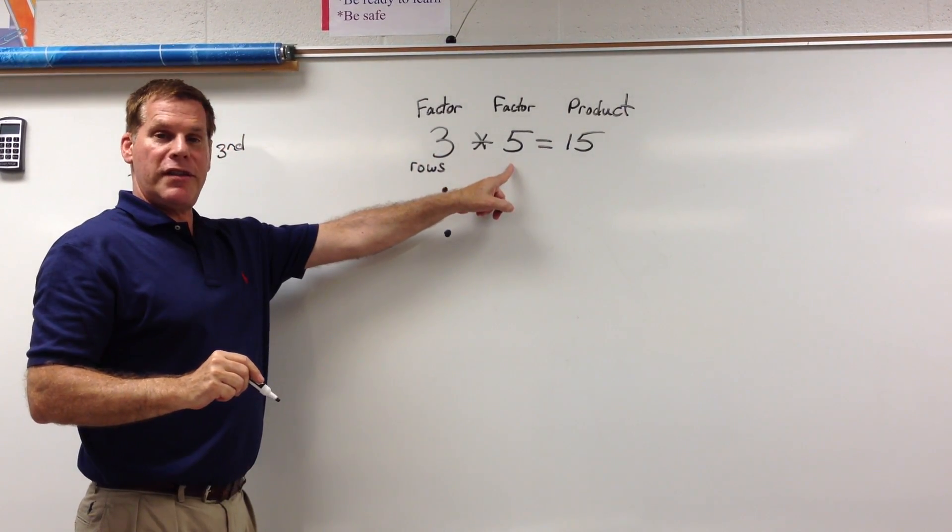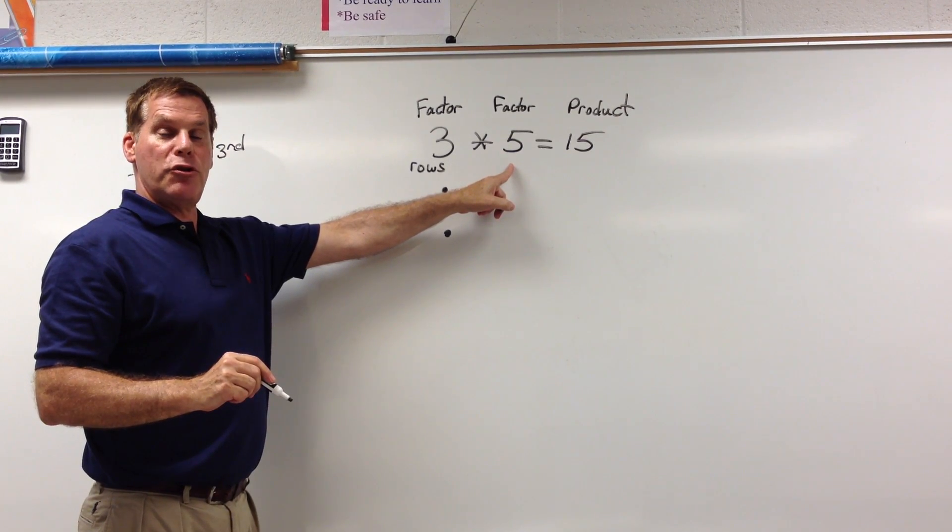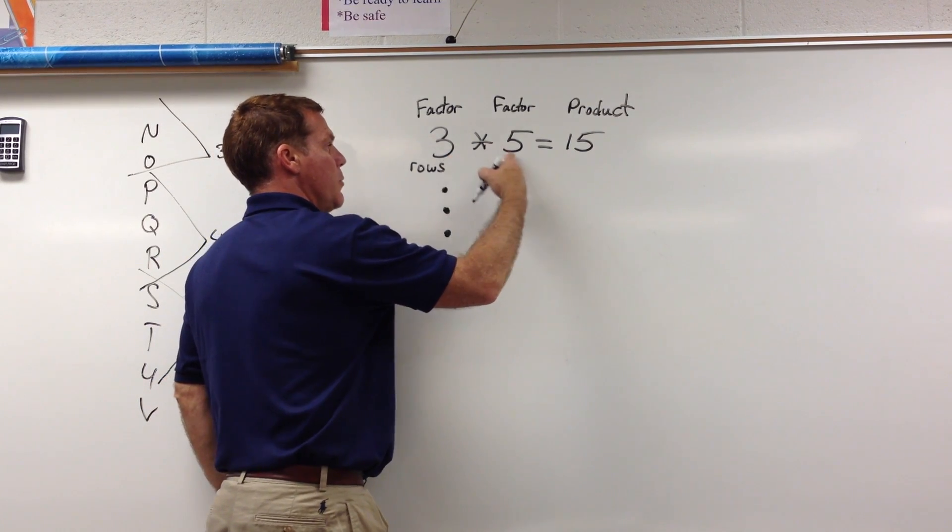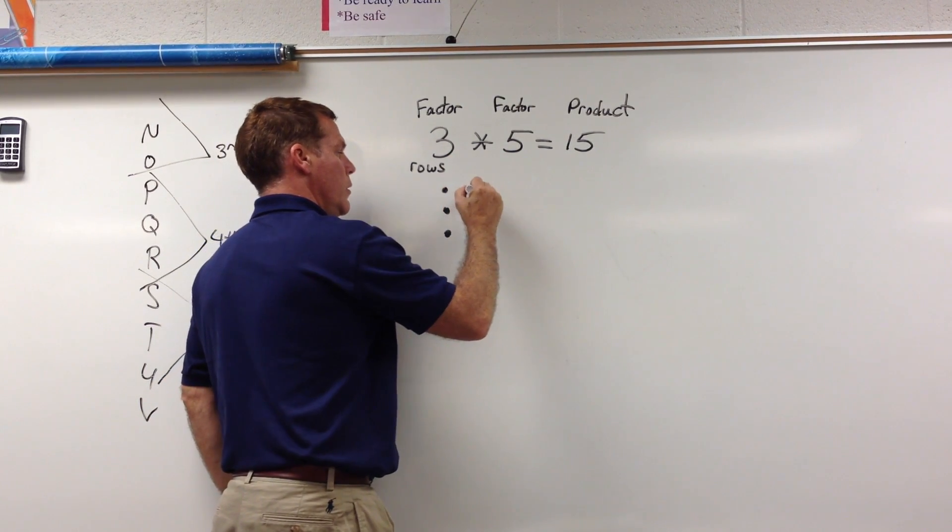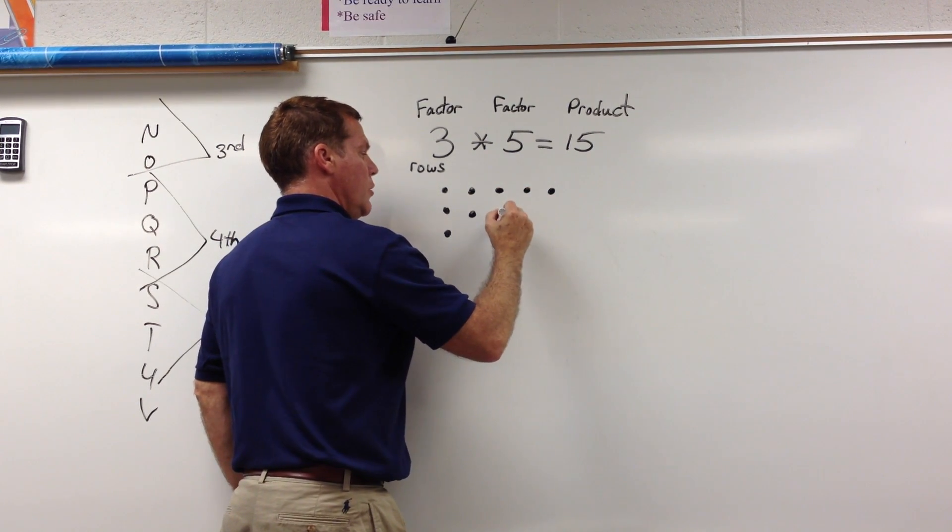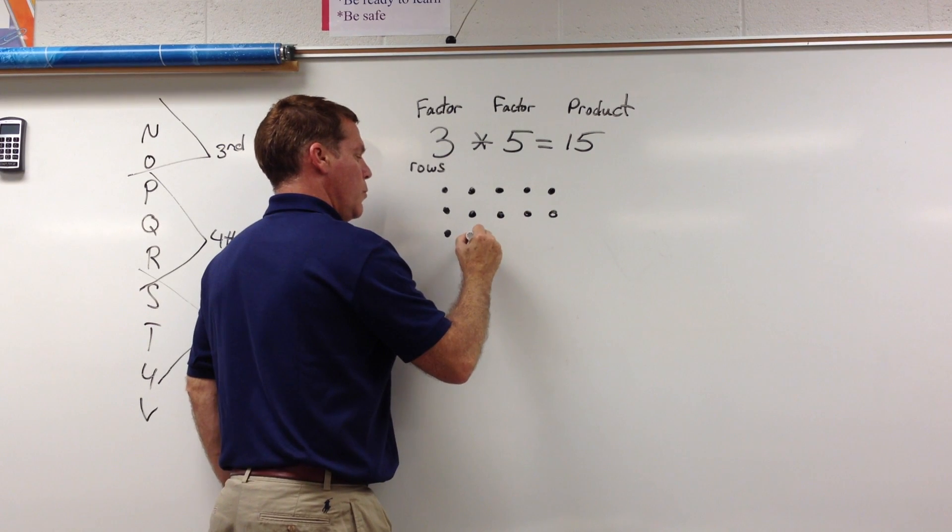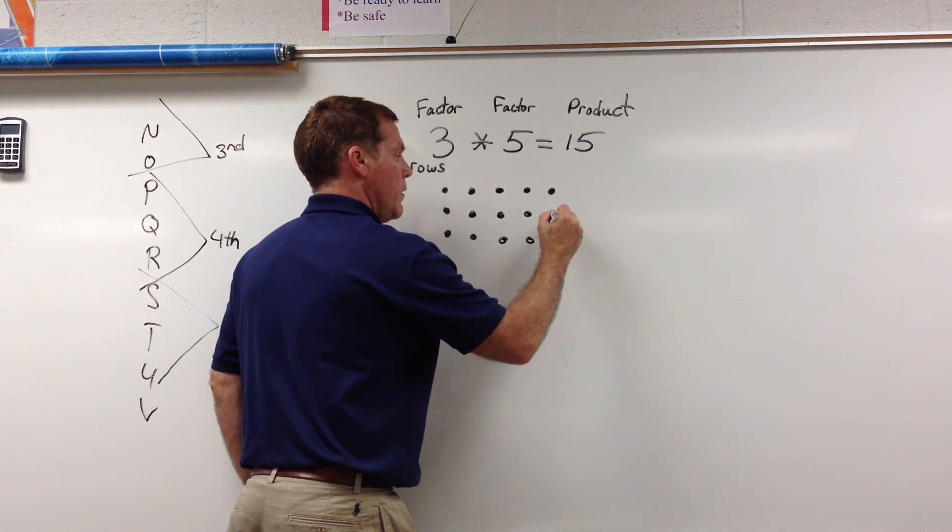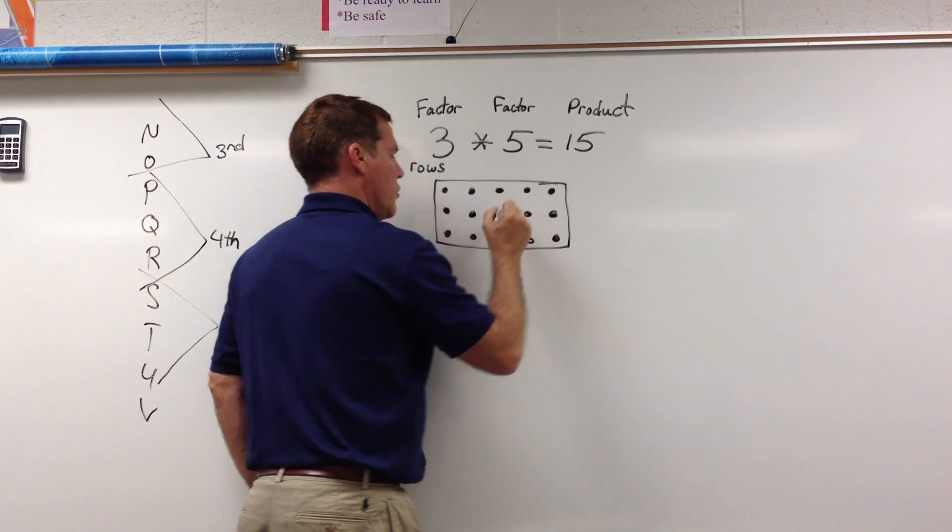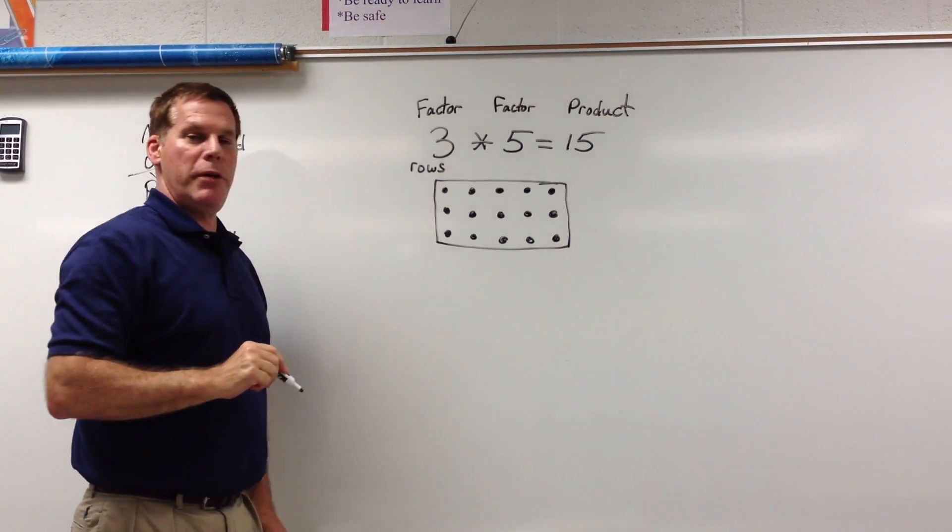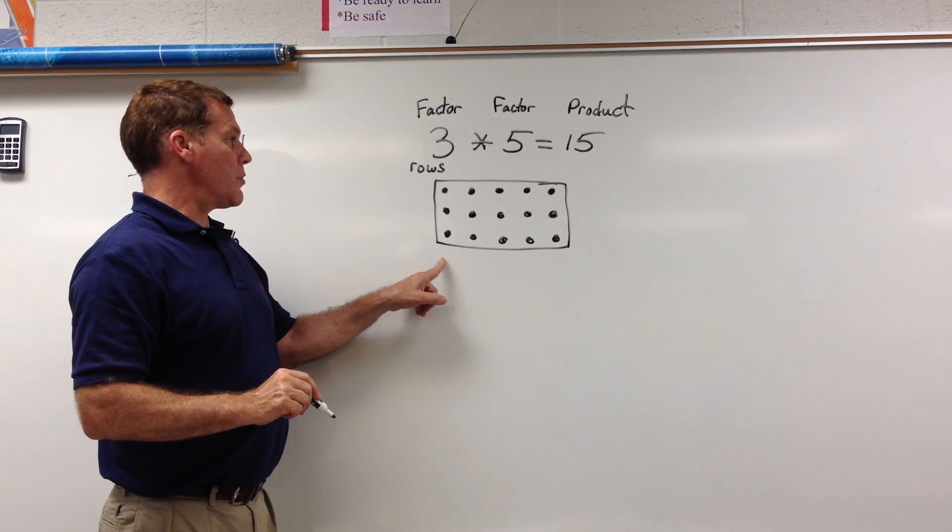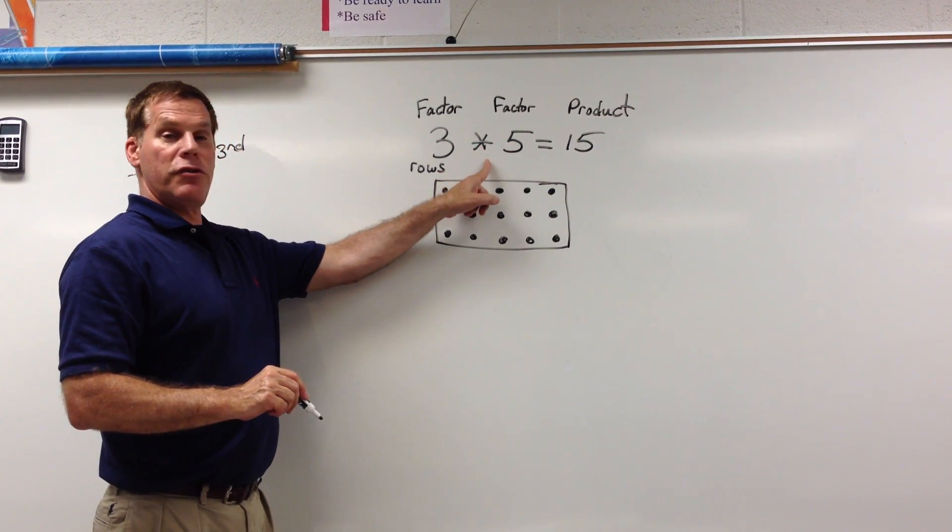The second number is how many numbers do we have in each row or how many dots. So we have three rows. In this case we have five dots in each row. We'll count: one, two, three, four, five. One, two, three, four, five. And we notice, as long as we meet this, it's called a rectangular array. It has to be able to make a rectangle. This is what we call our rectangular array for this number model.